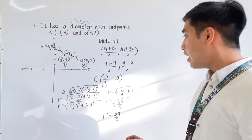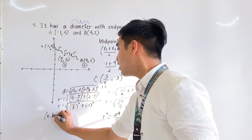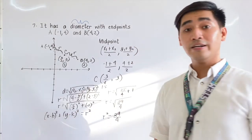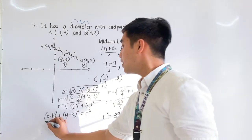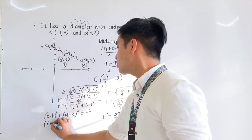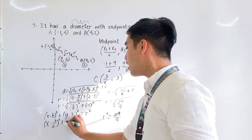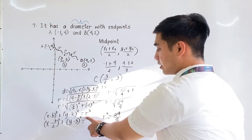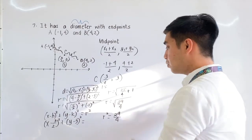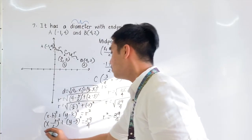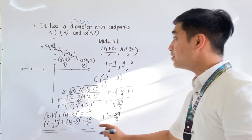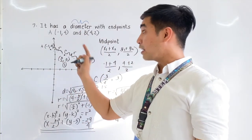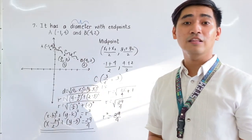Substituting into our formula: (x minus h) squared plus (y minus k) squared equals r squared. That becomes (x minus 3 over 2) squared plus (y minus 3) squared equals 29 over 4. Therefore, this is the equation of the circle having diameter with endpoints at A, which is negative 1 and 4, and B at 4 and 2.